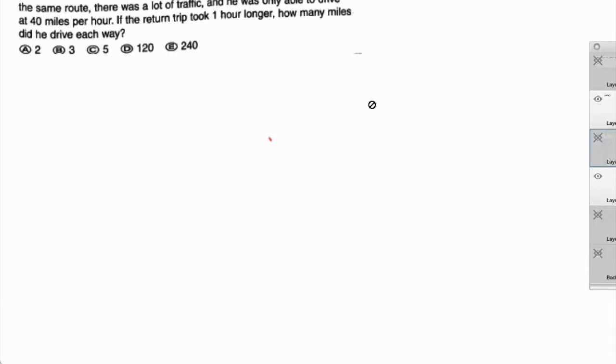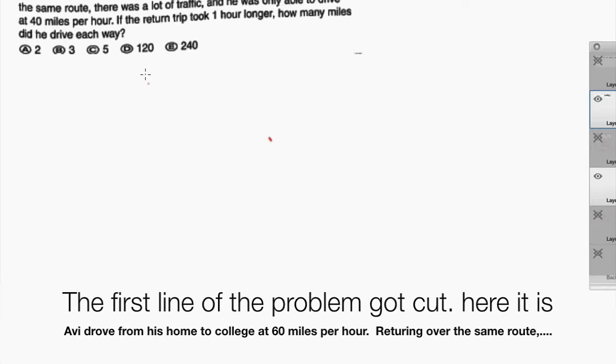Let's look at another example which is a bit more complicated than the last one but still uses the same strategy, same concept. Avi drove from his home to college at 60 miles per hour. Returning over the same route, there was a lot of traffic and he was only able to drive at 40 miles per hour.